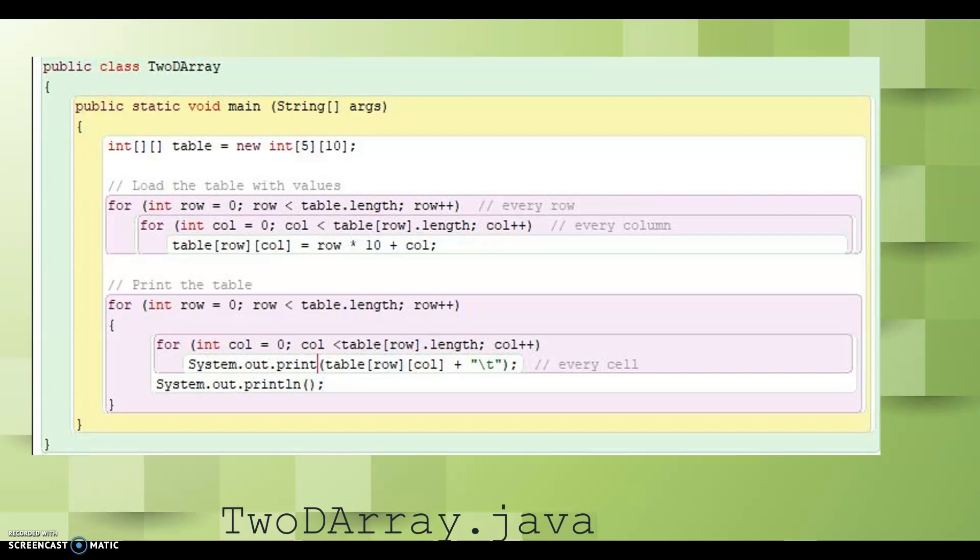Note that the outer loops are governed by the table.length, which is the number of rows, and the inner loops are governed by table[row].length, which is the number of columns in that row. Please pause the video if you need more time to study the code.